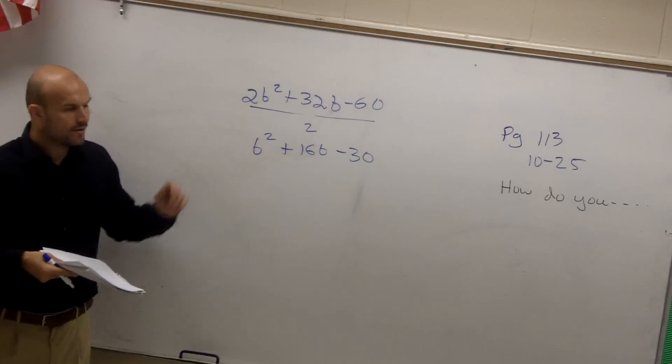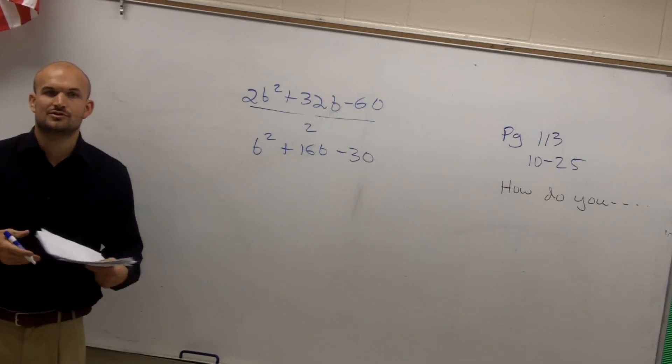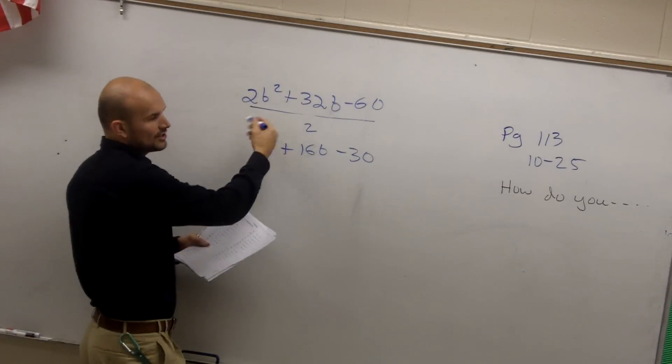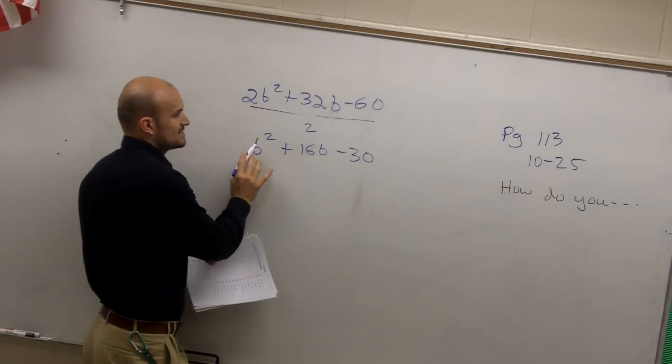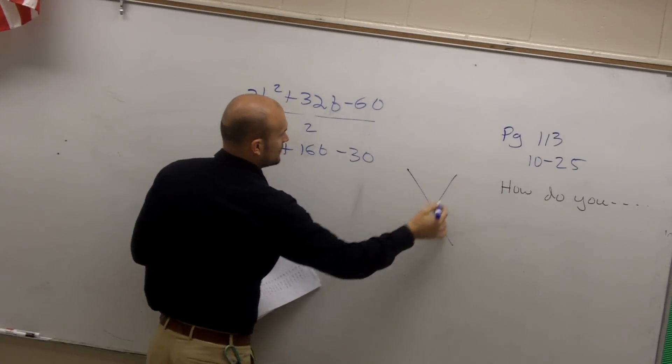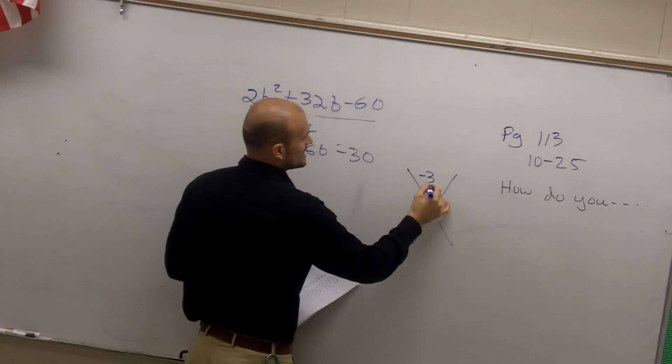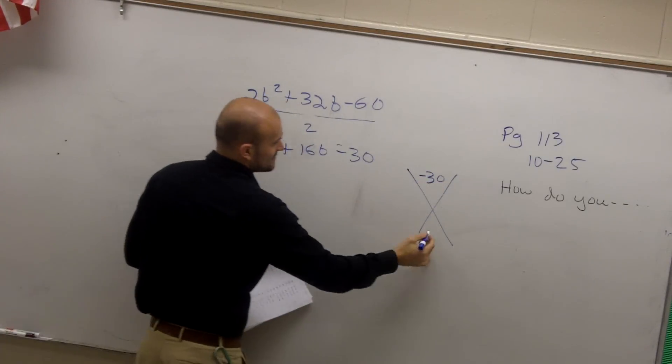All right, now I can go back to using my triangle. I could have done the A times C, but we're going to learn that in another class. So now I can do my triangle: 1 times negative 30 is negative 30, and then I have 16.